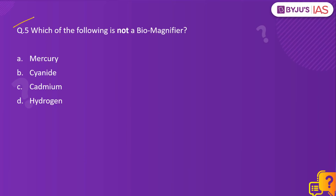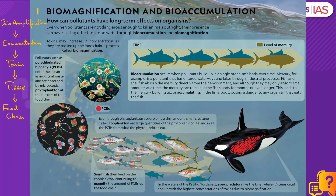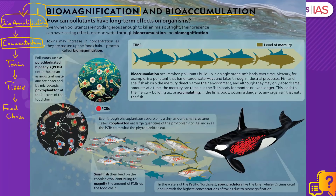Now let's look at the fifth question: Which of the following is not a biomagnifier? Mercury, cyanide, cadmium, hydrogen. The correct answer is option D — hydrogen is not a biomagnifier. The other three are biomagnifiers. To answer this question, you need to understand biomagnification and bioaccumulation. Biomagnification, also referred to as bioamplification, is the increasing concentration of a particular toxin in the tissues of organisms as you move up the food chain.